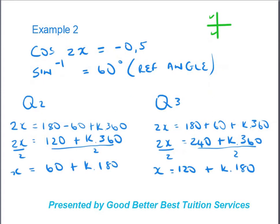Next example: cos(2x) = −0.5. The reference angle is cos⁻¹(0.5) = 60°. Now, where is cosine negative? It's negative in the second and third quadrants. The second quadrant is referenced as 180° − 60°, and the third quadrant as 180° + 60°. So for quadrant two: 180° − 60° + k×360°, which gives 120° + k×360°.